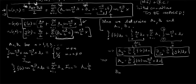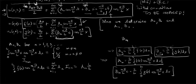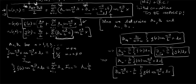Similarly, the coefficient b_m satisfies b_m times m pi divided by L times c equals 2 divided by L times the integral from 0 to L of g of x times cosine of m pi over L times x dx. Therefore b_m equals 2 divided by m pi c times the integral from 0 to L of g of x cosine of m pi over L times x dx.